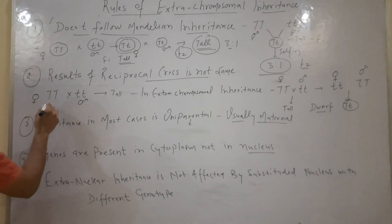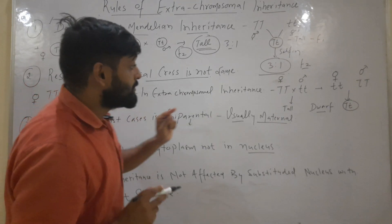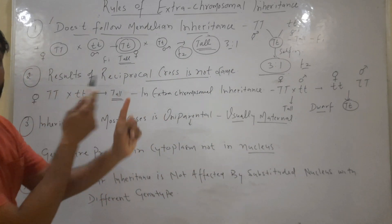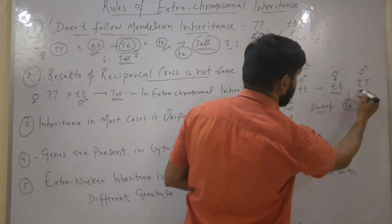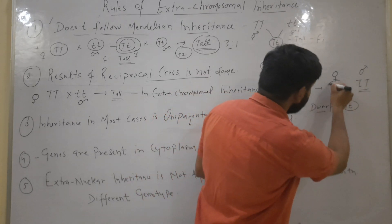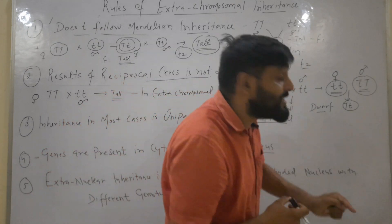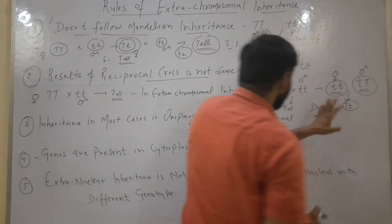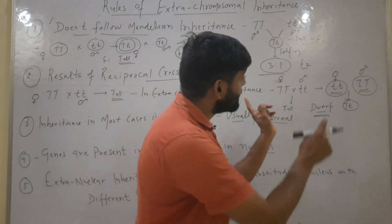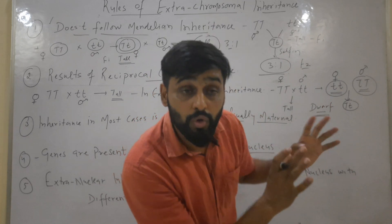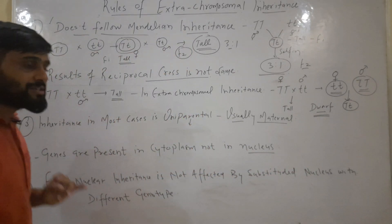For example, if tall female is crossed with dwarf male, F1 is tall. But when we reverse the sexes — dwarf female (small t, small t) crossed with tall male — the small t allele comes from the mother, and since extra-chromosomal inheritance means DNA or genes are always inherited from the mother, the offspring will be dwarf. So with the same traits but reversed sexes, results are different — reciprocal crosses give different results.